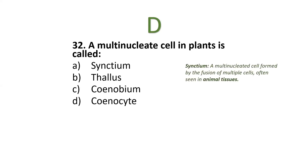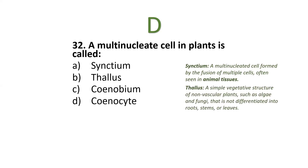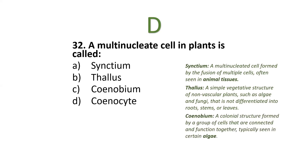You should also know the other terms: syncytium is related to animal tissues and is a multi-nucleated cell formed by fusion of multiple cells. Thallus is a simple vegetative structure of non-vascular plants such as algae and fungi, not differentiated into roots, stems, or leaves. Synobium is a colonial structure formed by a group of cells that are connected and function together, typically seen in certain algae.